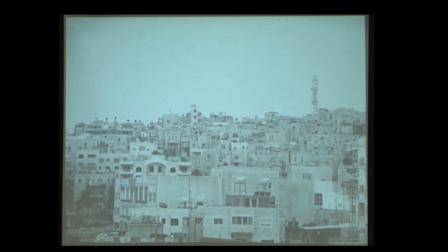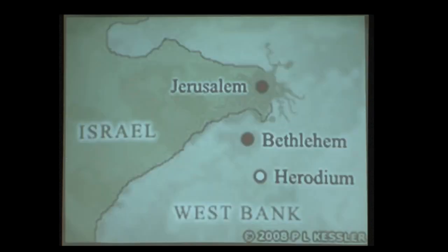One neat thing the British did when they ruled Israel from 1917 to 1947: they made a law that every house in and around Jerusalem must be built of or faced with that whitish Senomanian limestone, for uniformity. It doesn't look like a ghetto — it's a neat rule the Brits made.